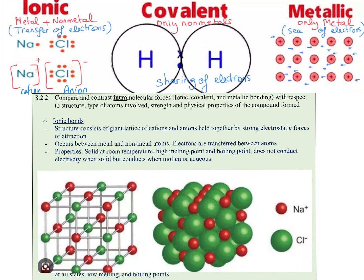Ionic bonds' structure consists of a giant lattice of cations and anions held together by strong electrostatic forces of attraction. It occurs between metal and non-metal atoms, and electrons are transferred between atoms. They are all solid at room temperature, forming this rigid lattice structure of cations and ions held together.